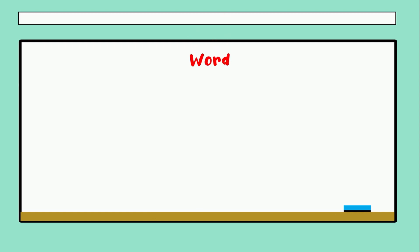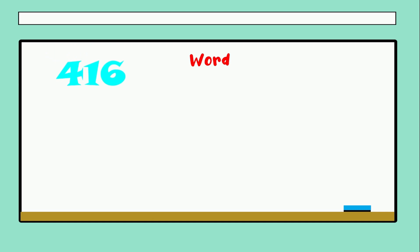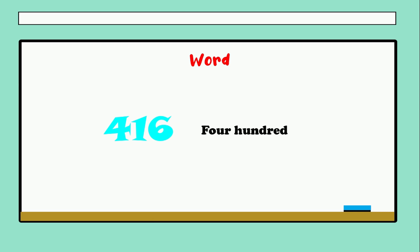Let's continue with another different way to represent a number — in word form. Here we have the number, and we have to write it in words. Five hundred, twenty, and seven — so what is the number? Five hundred twenty-seven. Very good. The next one: what is the name of this? Four hundred sixteen. Very good.